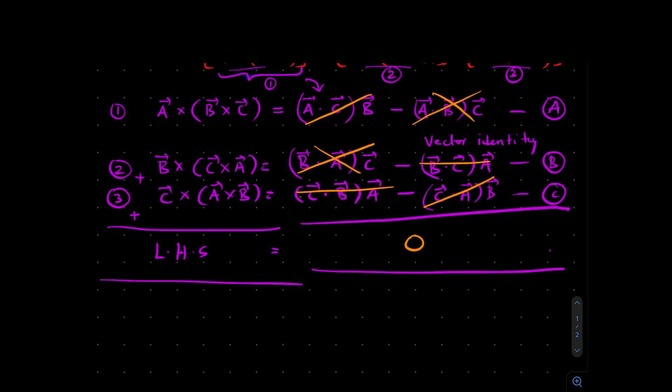So we have proved that A cross (B cross C) plus B cross (C cross A) plus C cross (A cross B) equals zero using the above identity. Thank you.